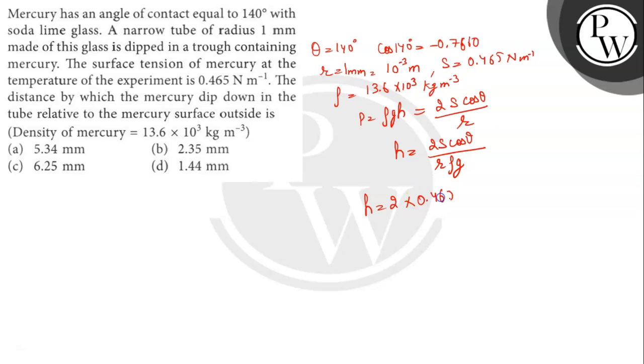...cos 140, and r is 10 to the power minus 3, rho is 13.6 into 10 to the power 3, and g is 9.8.